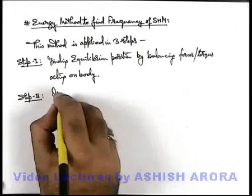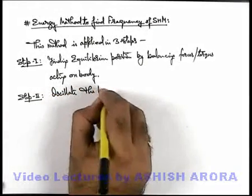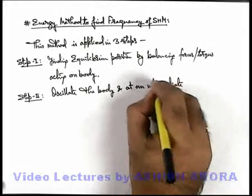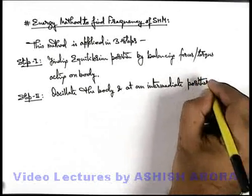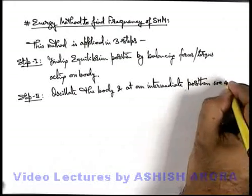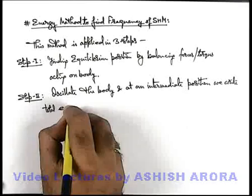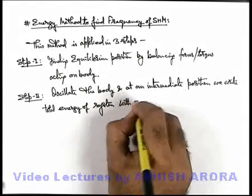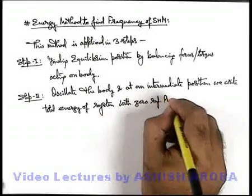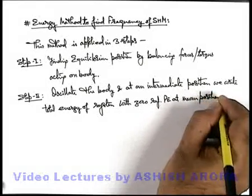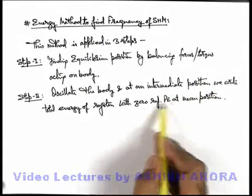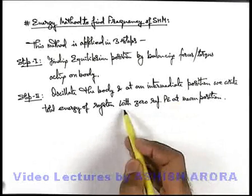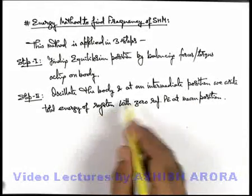We oscillate the particle or body and at an intermediate position of body, which should neither be at mean or at extreme position in between, we write total energy of system with zero reference potential energy at mean position.